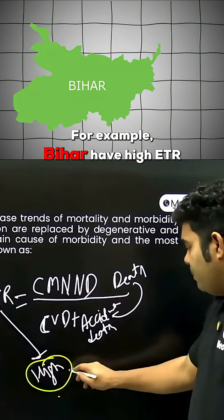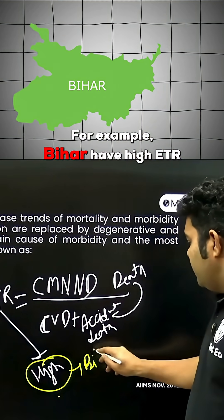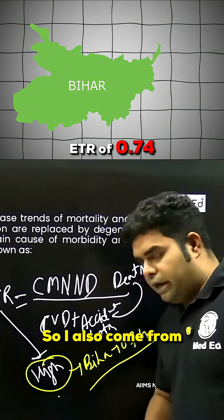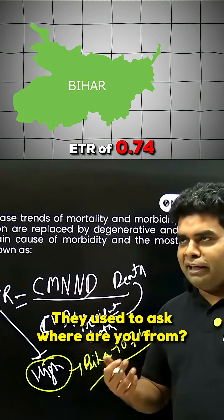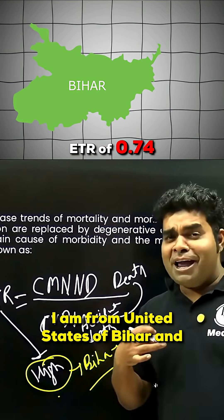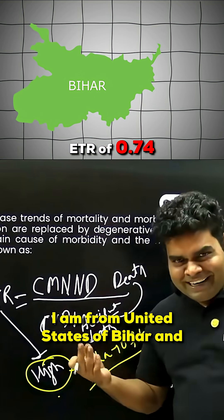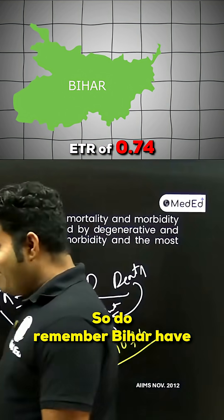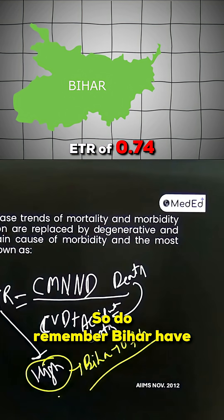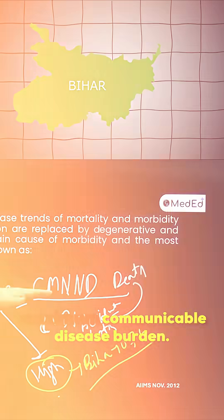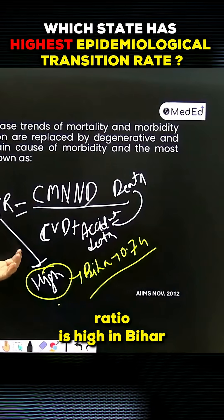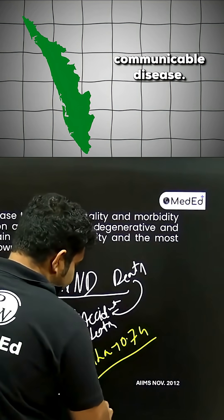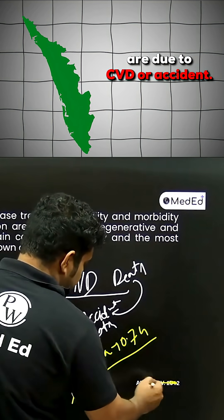For example, Bihar has a high ETR of 0.74. The speaker jokes that Bihar is similar to the 'United States of Bihar' — similar to USA. Bihar has the maximum communicable disease burden, so its epidemiological transition ratio is high.